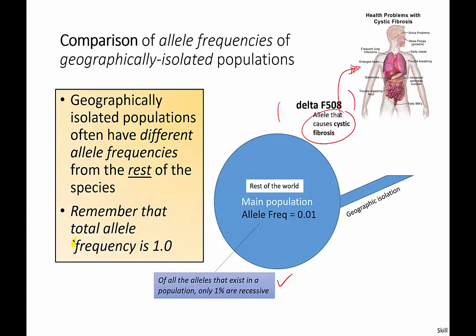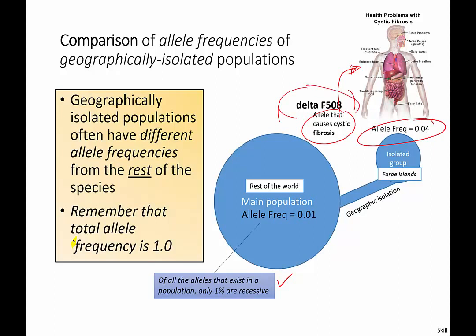However, one group gets isolated — either from living up in the mountains, an earthquake separating a particular area, or a group moving off to an island where they don't interact with many others. In this isolated group, and this is a real story from the Faroe Islands, the allele frequency for the allele that causes cystic fibrosis is actually 4%. That's significantly higher than the main population.